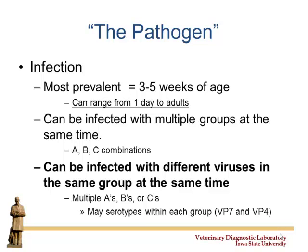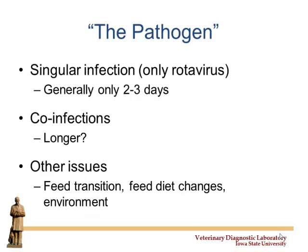Coming back to the G and P types based on VP4 and VP7 combination: if you inoculate with a single rotavirus isolate, incubation is generally about two to three days experimentally, probably more like four to five in the field. Also, feed transitions will actually cause intestinal epithelial cells to change, which could make incubation shorter or longer. Diet changes, environment, and ingredients all play into the severity based on the maturation of enterocytes going to the top of the villi.